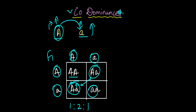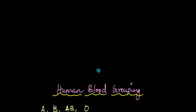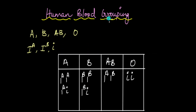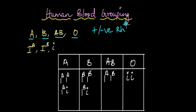A most common example of codominance is the human blood group. We inherit our blood group from our parents, and there are four major types: A, B, AB, and O. We're not talking about the positive or negative grouping, which has to do with the Rh factor. The expression of these four blood group patterns is controlled by a single gene which has three alleles.